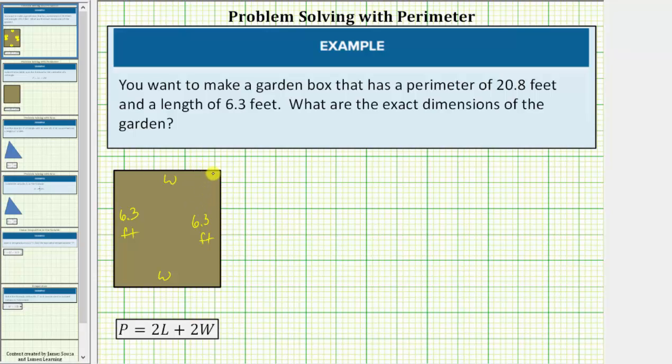But we can also use the perimeter formula p equals 2 times l plus 2 times w to set this up. Let's go ahead and use the formula. So the perimeter p is equal to 2 times the length plus 2 times the width.